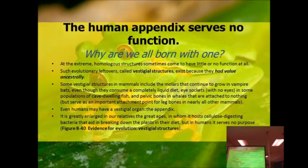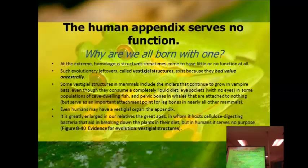Inside each human there is an appendix. If you've ever had your appendix taken out, you know that nothing really changes from when you had it to when you don't have it. Since it has no function, why do we still have an appendix? This is an example of a homologous structure. A human appendix is a homologous structure that has no function.